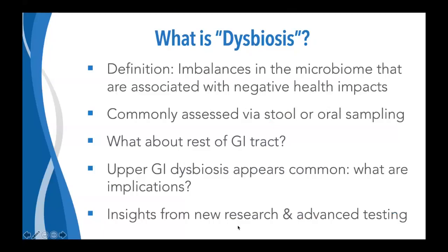There's a lot of brand new research that's been coming out, especially even in the last year, that has started to yield some pretty interesting insights and suggest that dysbiosis in the upper GI tract not only is relatively common, but may have some pretty big implications overall for health. A lot of that new information has come from recent research as well as advanced gastrointestinal testing available over the last couple of years that involves very precise identification and quantitation of organisms in the gut.